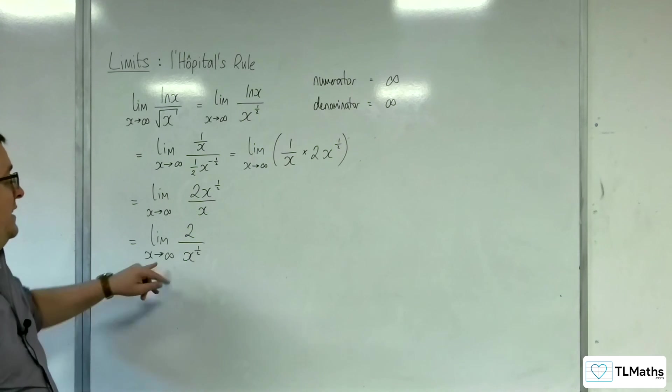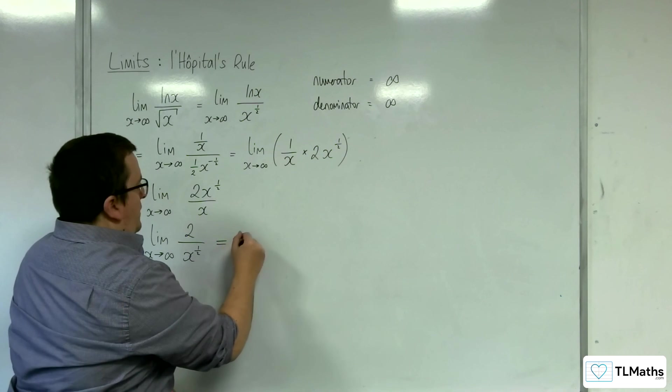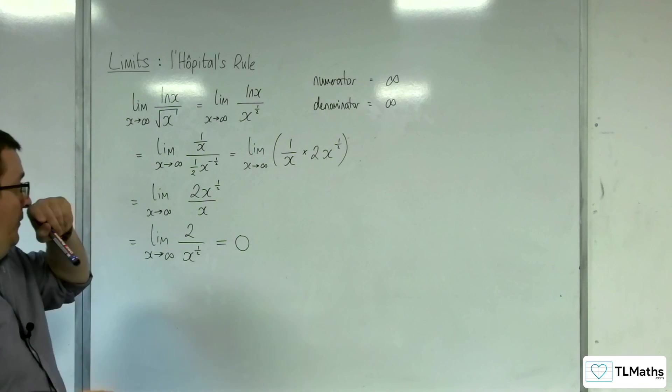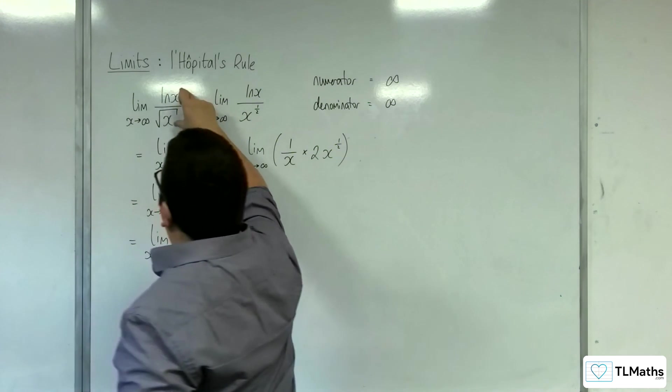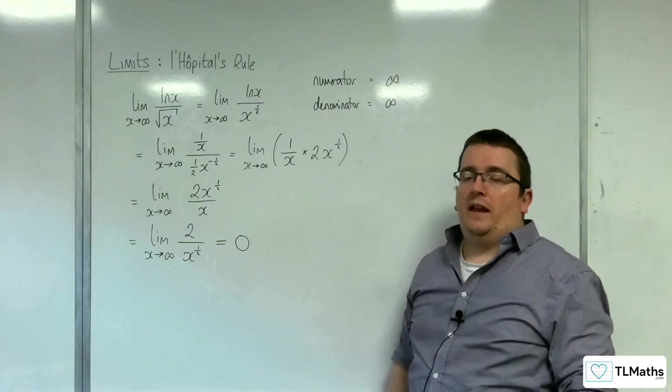And as x tends to infinity, 2 over x to the half will tend to 0. So what I'm seeing here is that the limit of this function is actually 0 as x tends to infinity.